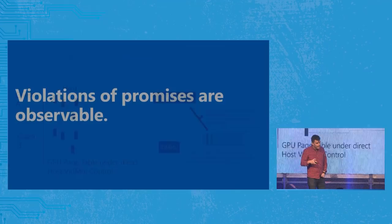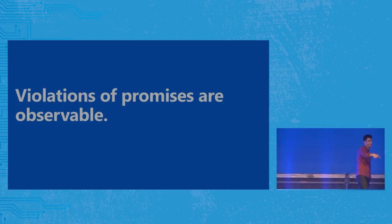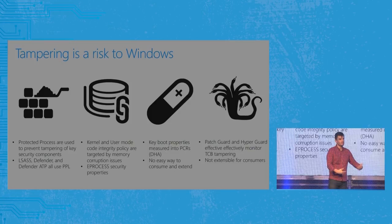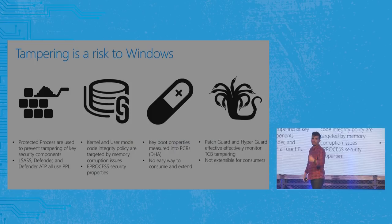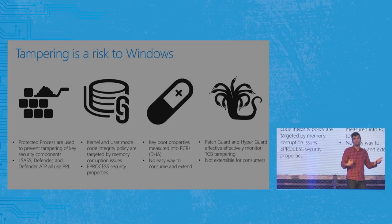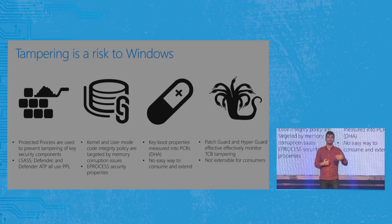The final thing I'm most excited about is the progress we're making on observing violations of any of the security properties I showed. Tampering is a big risk in Windows — we use protected processes to prevent tampering of things like Defender, Defender ATP, the firewall — all critical TCB components are in what are called PPL or Protected Process Light. The downside of PPL is it's only as effective as you can prevent kernel code execution. Administrators can simply load drivers to remove that protection — immutable security property number seven. Kind of a bummer.